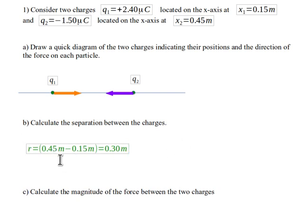So 0.45 meters minus 0.15 meters, which is 0.3 meters. You should be able to figure that out fairly quickly.